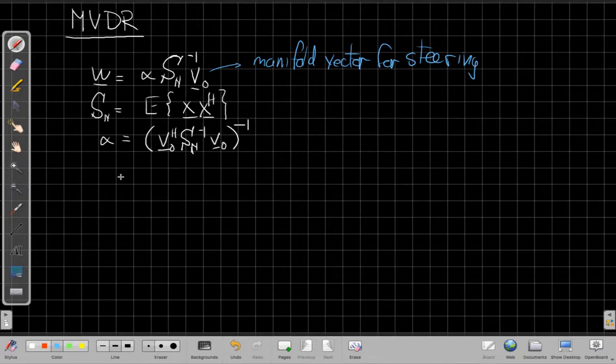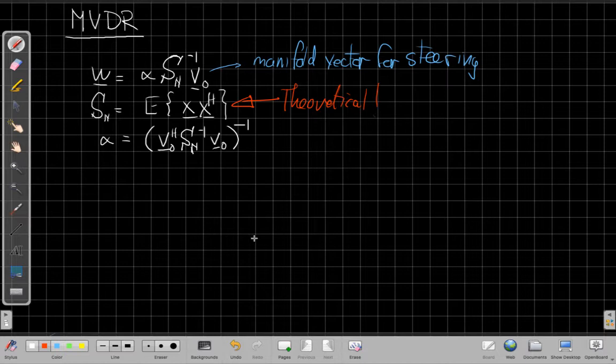This is great in theory but what's difficult here is this is a theoretical thing. To compute an expected value I need to know the PDF of the actual data. I may not know that if I don't know where the interferers are or how loud they are. So in practice we often have to estimate that.